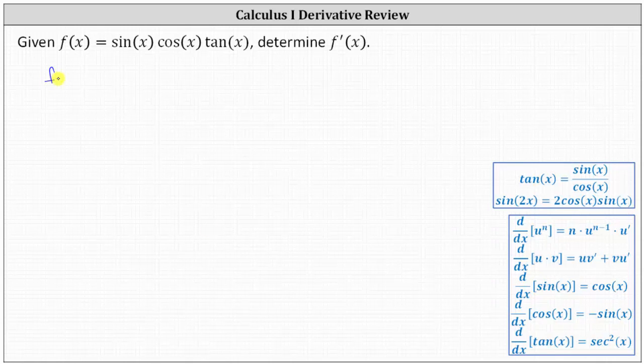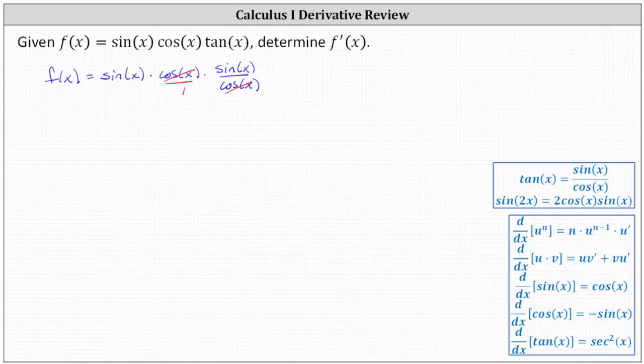Let's write f(x) = sin(x) × cos(x) × (sin(x)/cos(x)). Notice we can simplify: cos(x) divided by cos(x) equals one, and therefore we can write the function as f(x) = sin(x) × sin(x), which we can write as sin²(x).